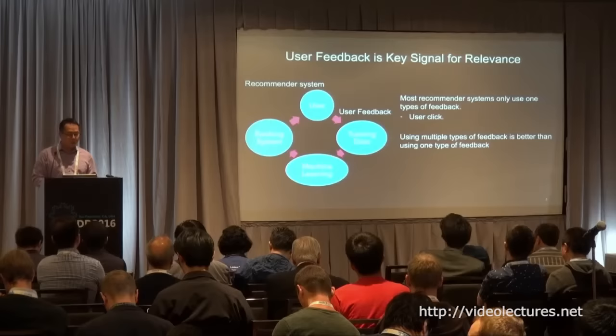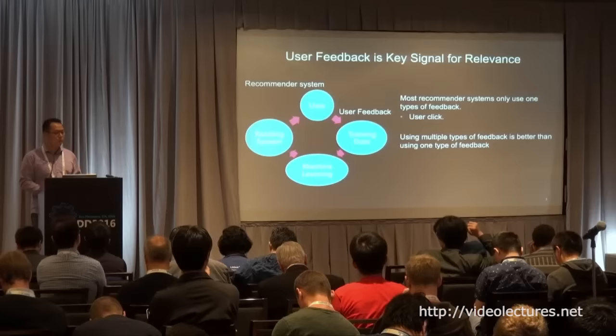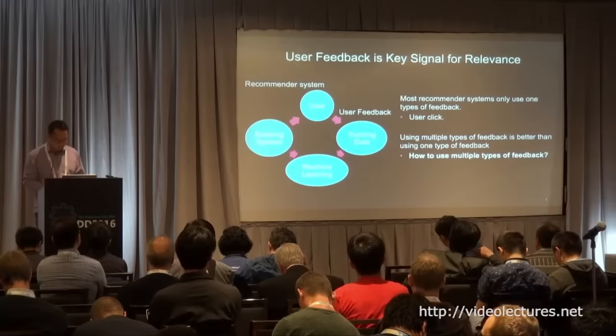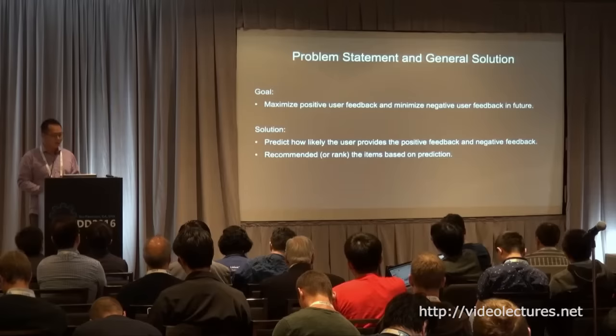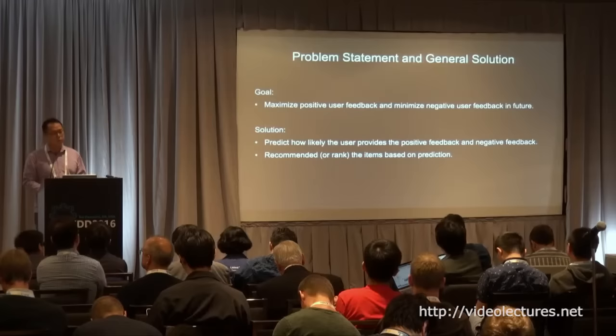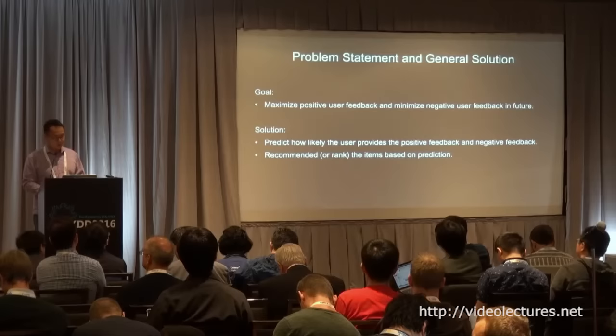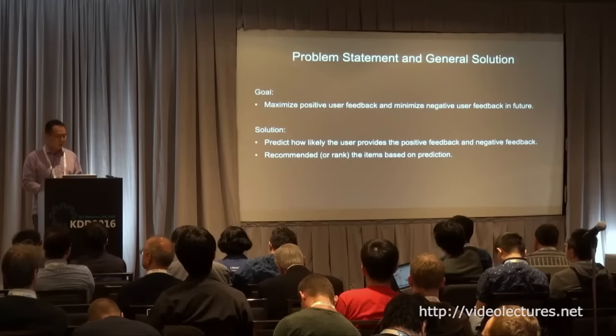So how can we use multiple types of feedback in a single recommendation system? Clearly, using multiple types of feedback is better than just one. The problem is how to combine them. This is an empirical study — we didn't propose any new method. We just ran offline and online experiments to show what we found. The goal is to maximize positive user feedback and minimize negative feedback in the future, so we have to predict how likely the user will provide positive or negative feedback, and then do recommendation based on that prediction.